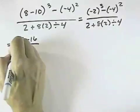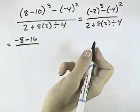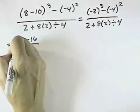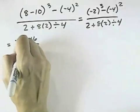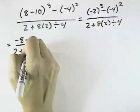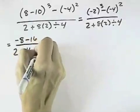And in our denominator, our denominator has no exponents, so we can start with multiplication and division from left to right as they occur. So 2 plus, we have 8 times 2, which is 16. Then we'll divide that by 4.